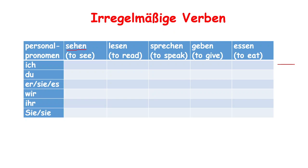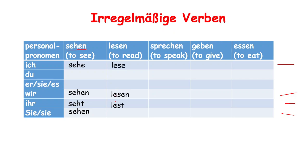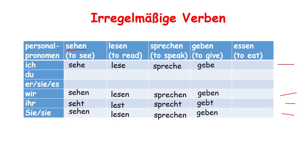But for ich, wir, ihr, and sie, the conjugation is the same as in regular verbs. For ich, we add -e, and for wir/sie we keep -en. For example: sehen, lesen, sprechen — the forms for ich, wir, ihr, sie follow the same pattern as regular verbs.